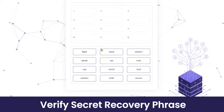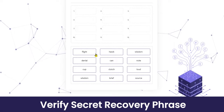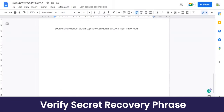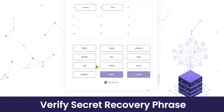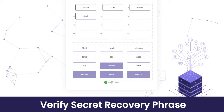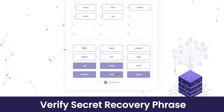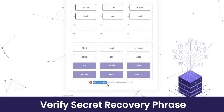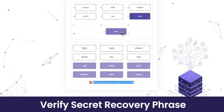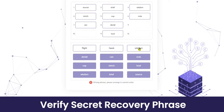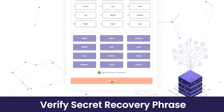In the next step you will have to verify your recovery phrase by entering the terms you saw on the previous screen. It will show that you are going well as long as you enter all the terms in the right order. If you enter an incorrect term, it will tell you that you've entered the wrong phrase and you'll need to arrange them in the correct order. Once confirmed, click on 'Confirm'.